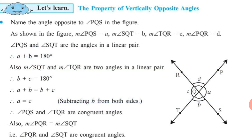Let's learn the property of vertically opposite angles. Look at the figure — name the angle opposite to angle PQS. The opposite angle is angle RQT. Now, let us denote the measures of these angles with alphabets. Measure of angle PQS is denoted as A, so measure of angle PQS equals A.